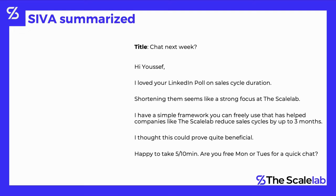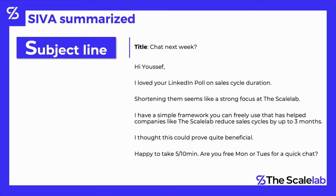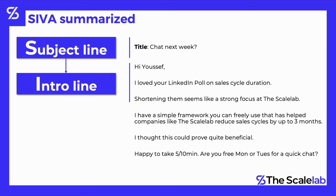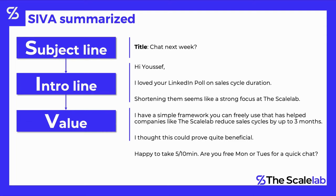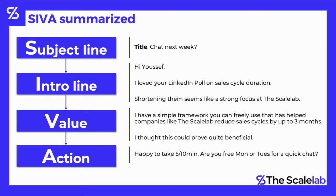Let's now summarize the SIVA framework. Subject line: 'Chat next week?' Intro line: 'Hi Youssef, I loved your LinkedIn poll on sales cycle duration. Shortening them seems like a strong focus at the Scale Lab.' Value: 'I have a simple framework you can freely use that has helped companies like the Scale Lab reduce sales cycles by up to three months. I thought this could prove quite beneficial.' Call to action: 'Happy to take 5–10 minutes — are you free Monday or Tuesday for a quick chat?' This is a clear four-step framework to write all your cold emails with.